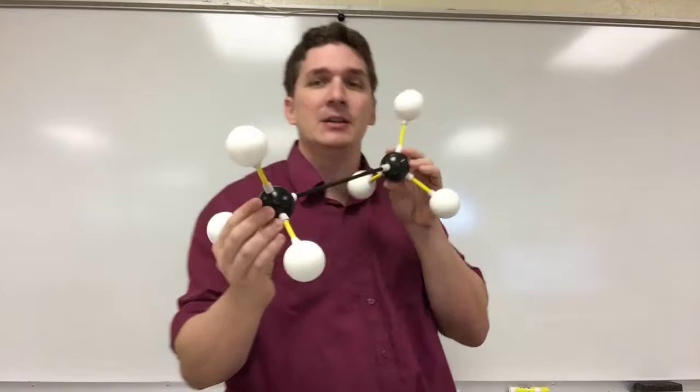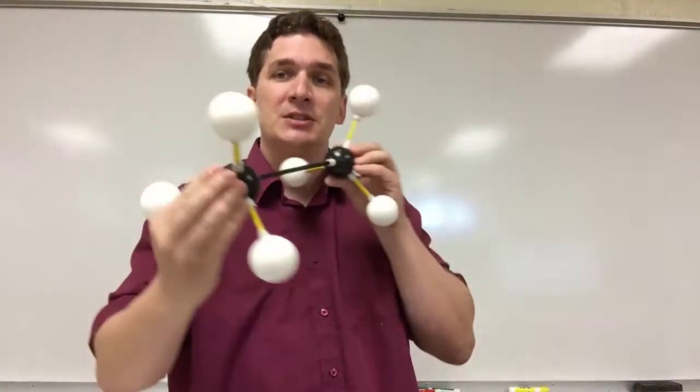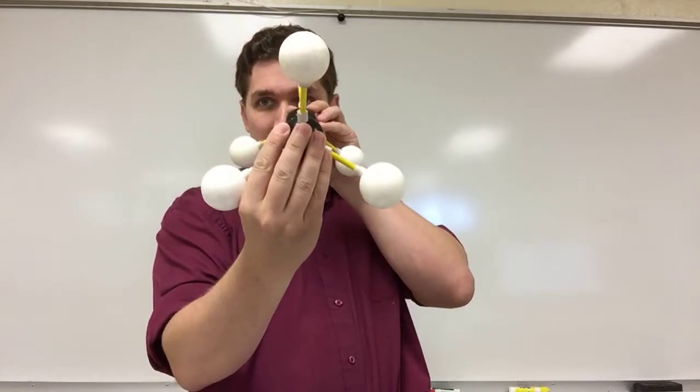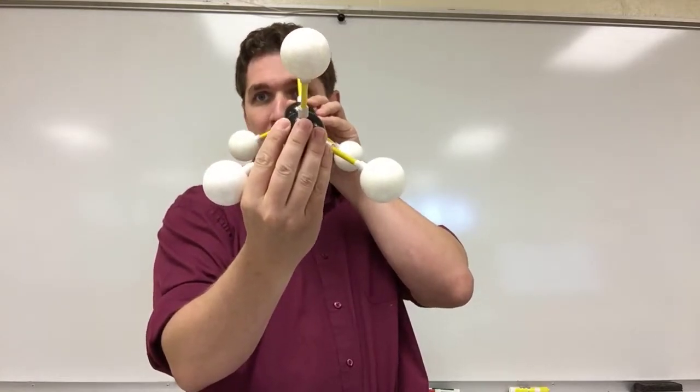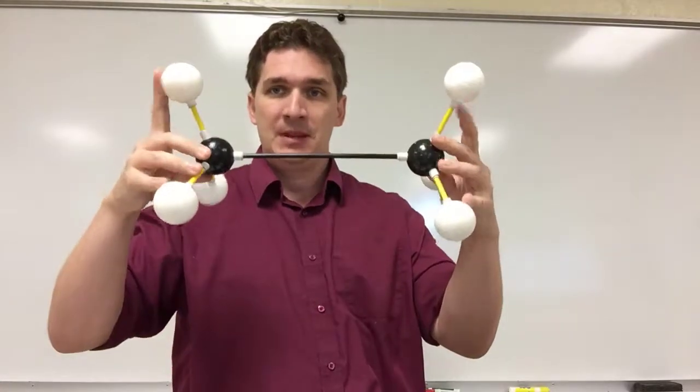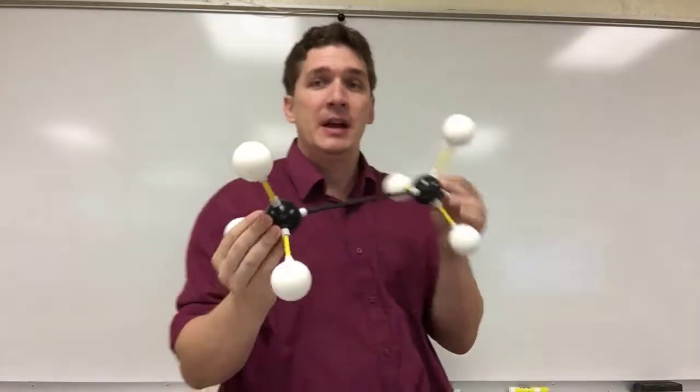And because of this, if we have an alkane, we actually get bond rotations. And this can give us different geometries of the different atoms. So looking down the bond length, we can have a situation where the atoms are basically overlapping. So we have two atoms on top, matching with two atoms on bottom.